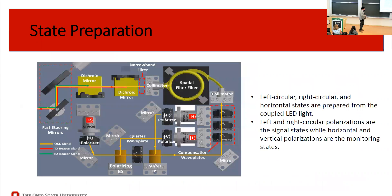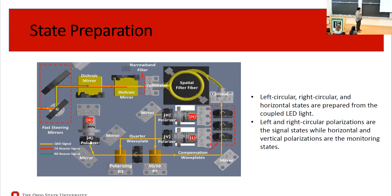To create our polarization states, light from each LED is coupled to a collimator. We use left and right circular polarizations as our signal states and vertical and horizontal polarizations as our monitoring states. For example, to create right circular polarization, light from the LED passes through a horizontal polarizer and then through a quarter-wave plate, creating the right circular polarization state.